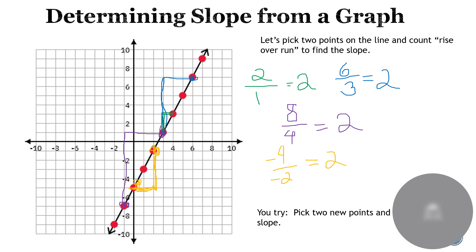Now I want you to pause the video and pick two new points that I did not pick — any two points anywhere on this line. Find the slope between those two points by counting rise over run. Go ahead and pause.